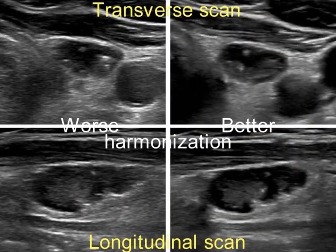Left shows the node with worse while right shows with better harmonization. I emphasize here two important things. First, let's compare the lower images. The less harmonic image on the left reflects the reality — that is, the darkest areas are solid and not cystic.